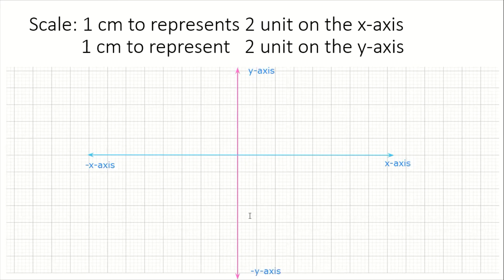So we're finished with labeling the axes now. We need to indicate on our diagram where the origin is. Our origin is always going to be where both lines intersect each other, so that is our origin there.